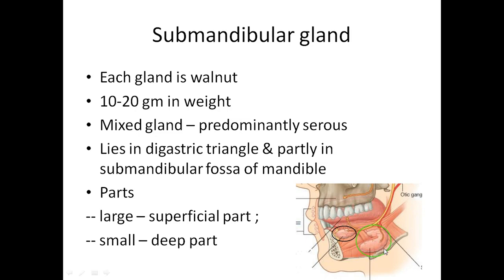Coming to the parts of the submandibular salivary gland: 90 percent of the gland is the larger superficial part, also called the subosal part. It wraps across the posterior border of the mylohyoid muscle, and the remaining 10 percent is the deep part. The gland is thus divided into a larger superficial part and a smaller deep part by the mylohyoid muscle.